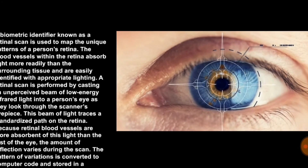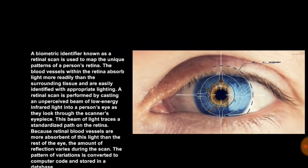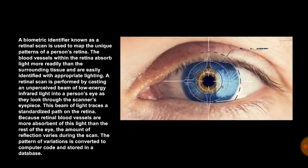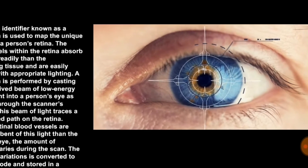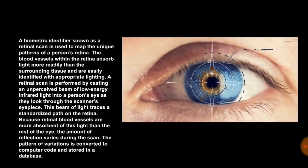The retina typically remains unchanged from birth until death. A biometric identifier known as a retinal scan is used to map the unique patterns of a person's retina. The blood vessels within the retina absorb light more readily than the surrounding tissue and are easily identified with appropriate lighting.